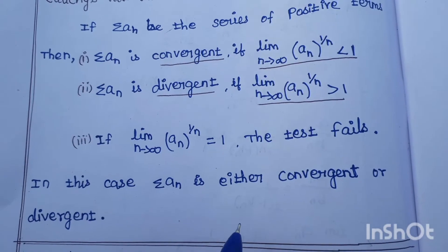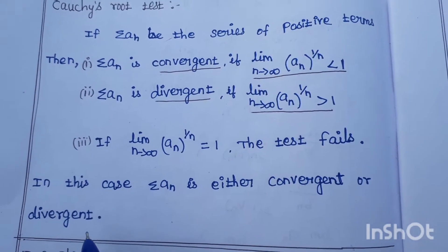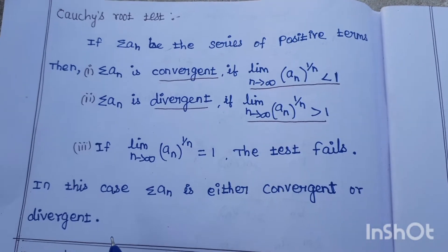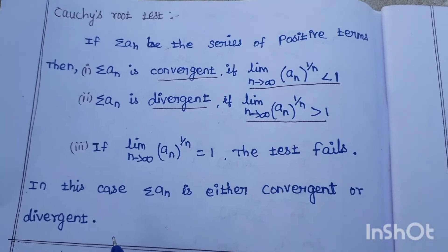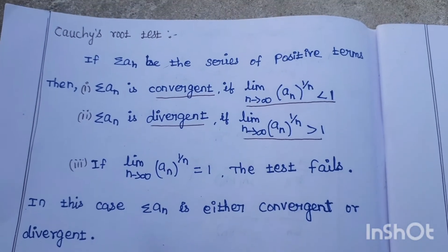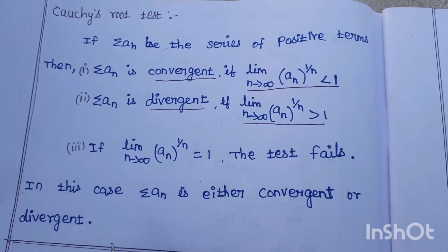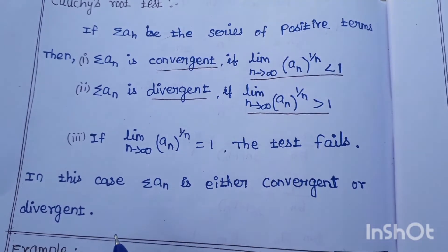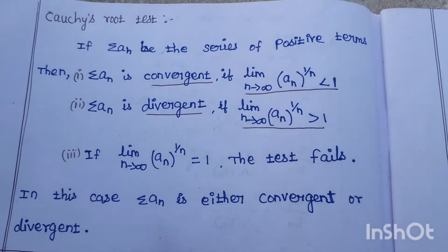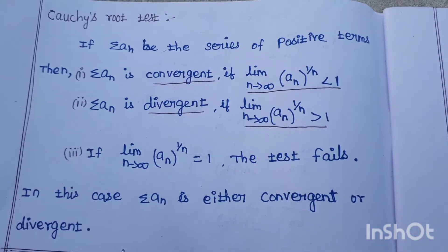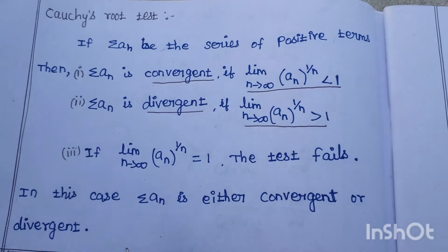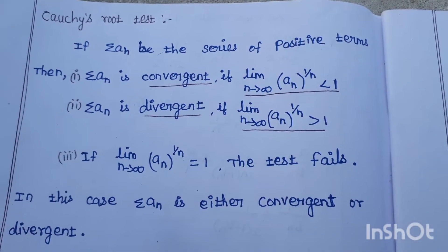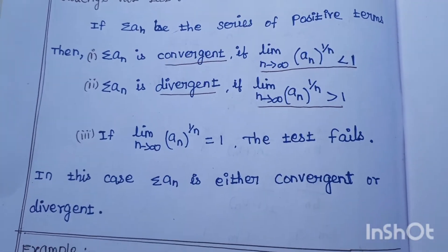In this case, sigma a_n is either convergent or divergent. That's why sigma a_n is a positive terms series. If limit n whole power 1/n is less than 1 then sigma a_n is convergent; greater than 1 it is divergent; equal to 1 the test fails — sigma a_n is convergent or divergent. Let's look at the examples.